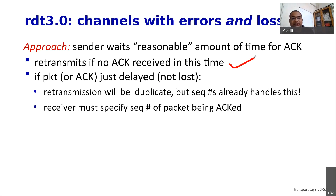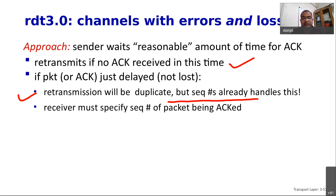If the packet or the acknowledgement was only delayed but not lost, you have done a retransmission but the original acknowledgement may still come. In that case your retransmission will be a duplicate, so duplicate packets will flow in the network. We have already introduced sequence numbers — zero and one — which handle this: a packet received twice will be discarded. The receiver in every acknowledgement has to specify the sequence number of the packet it is acknowledging.